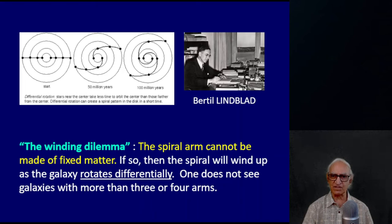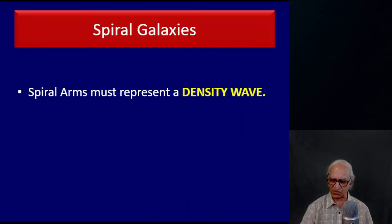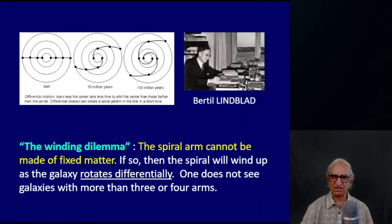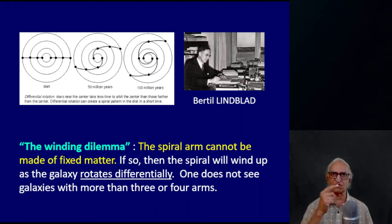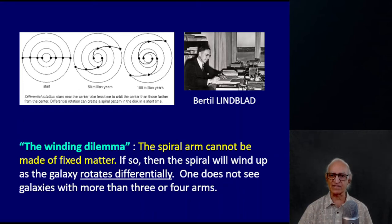Look at the pictures shown. Let us assume there are beads on these spokes — the beads being, of course, the galaxies. As the galaxy rotates differentially, with different angular velocity at different radii, over time these spirals will wind up once every turn of the galaxy. This is known as the winding dilemma.